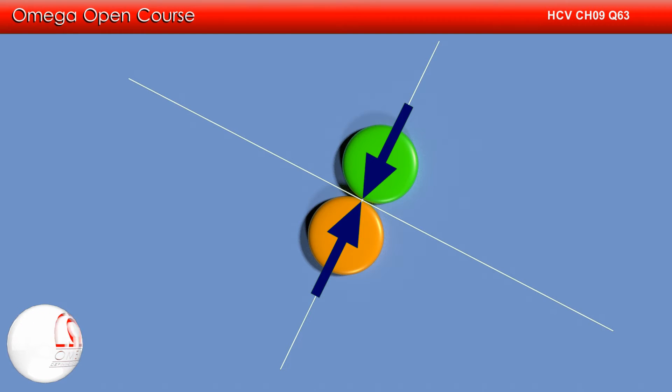This means during the collision there is no force acting in tangential direction. In absence of any force, the component of momentum along the tangential direction will remain unchanged for both bodies during the collision. If there is no change in momentum, there is no collision at all. So we can say there is no collision along the tangential direction.